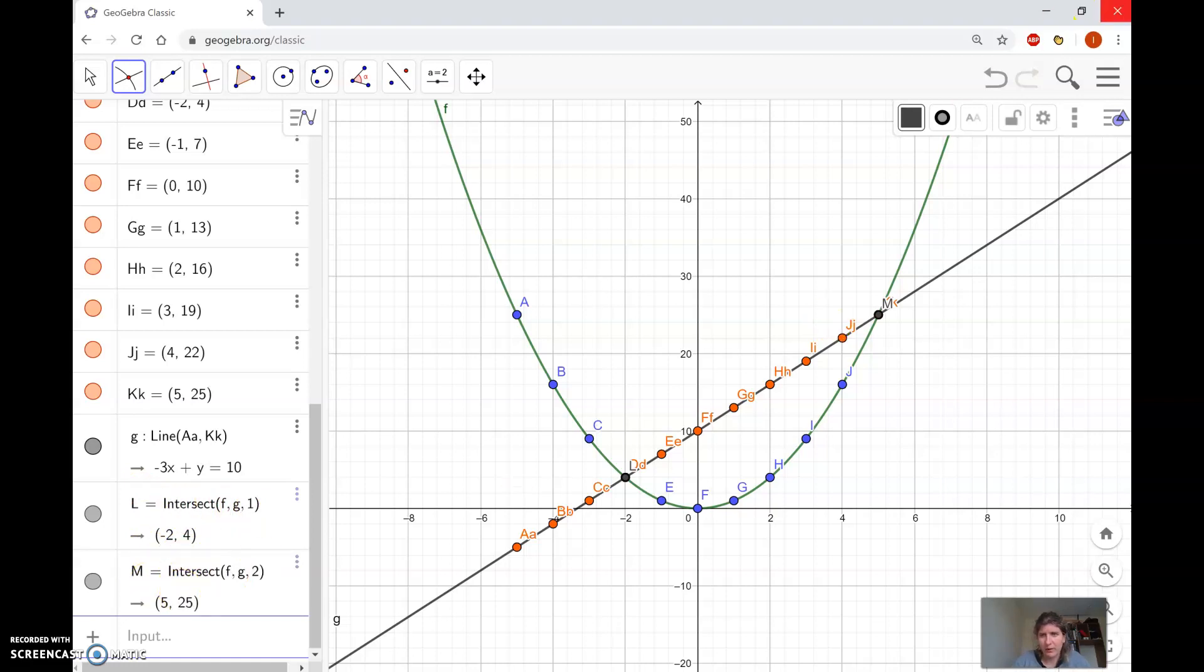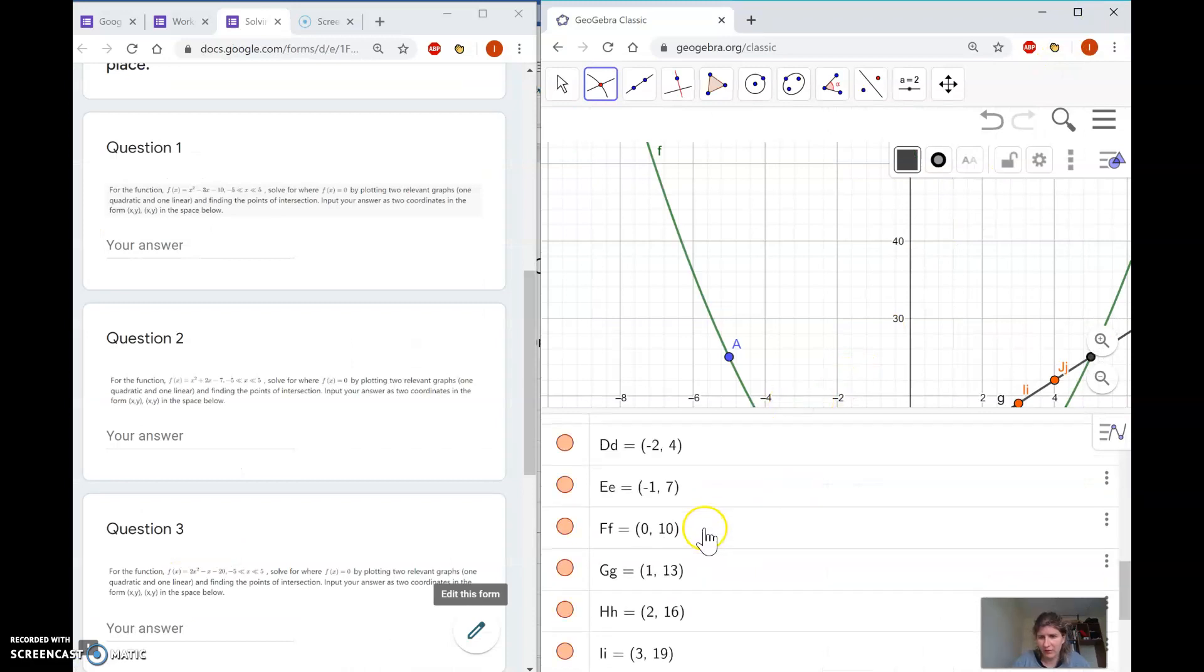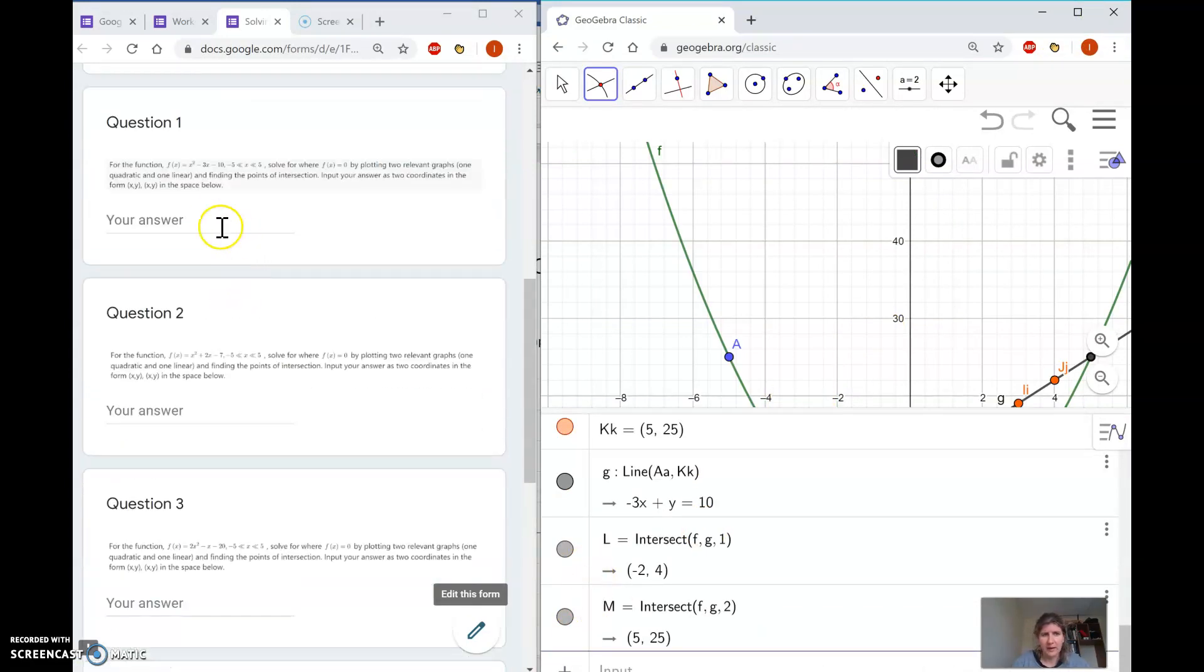Now I can type that into Google Forms. For your answers, if it has decimals, go to one decimal place. If it doesn't, just type it in. You're finding where f(x) equals zero, so your y value is zero. The format should be: (-2, 0), comma, space, (5, 0). If you don't use this notation exactly, it won't mark it as correct. Don't put a space at the end either, then move on to the next question.